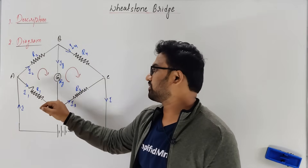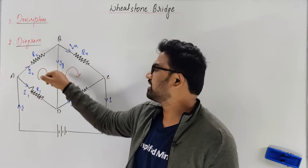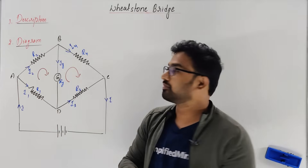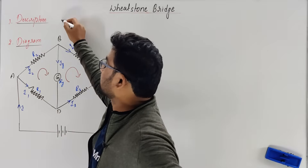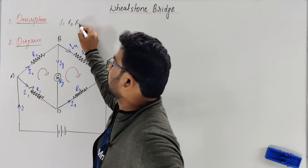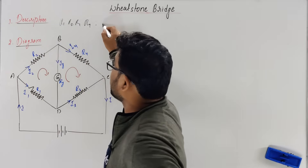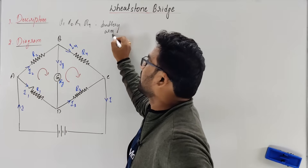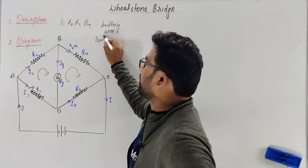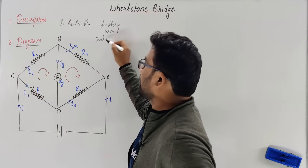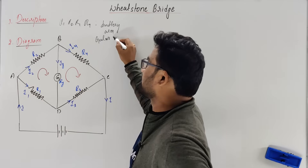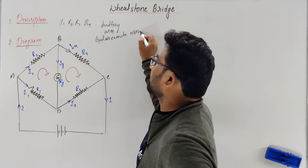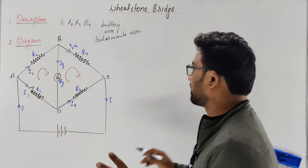Battery is connected across one pair of diagonally opposite points — that's called the battery arm. Galvanometer is connected across the other pair of diagonally opposite points — that's the galvanometer arm. Make sure you explain what R1, R2, R3, and R4 are, and explain the connections properly.